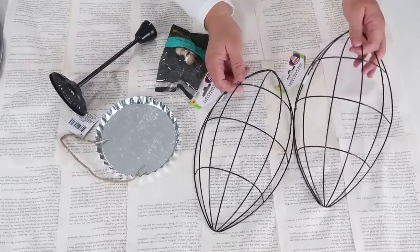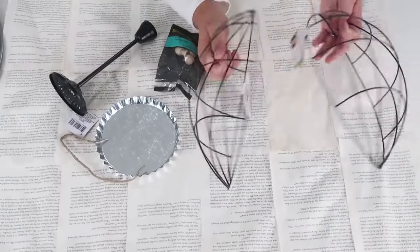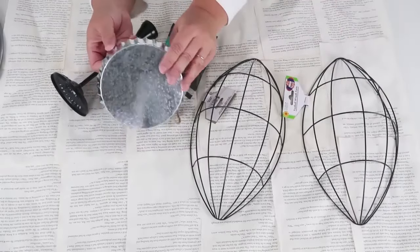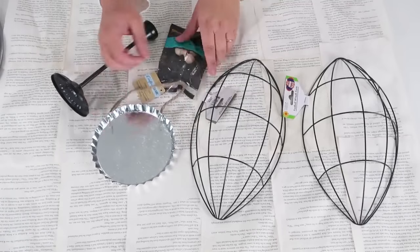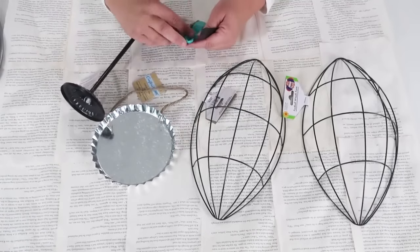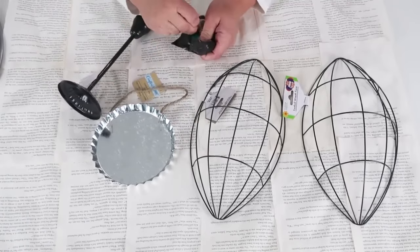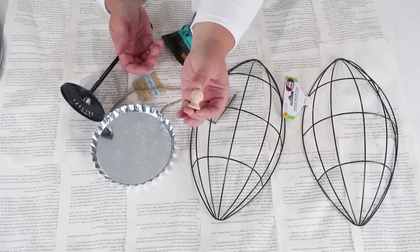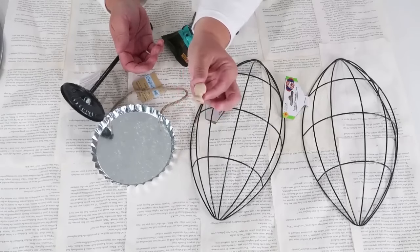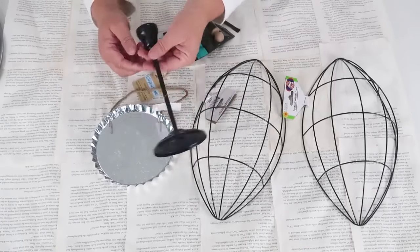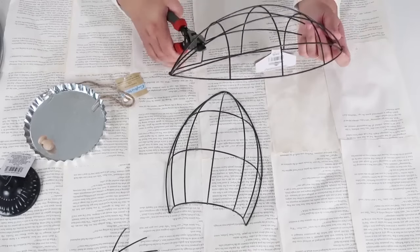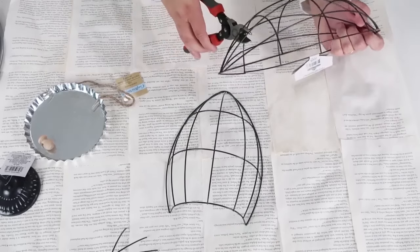For this DIY, we are going to be taking two of these wire football wreath forms, one of these galvanized, I almost call them bottle cap large metal plaques, some of these wood finials, I picked these up from Hobby Lobby. We're going to be using one of them. And then the last thing, this candle stem holder from the home decor section. We're also going to be using some zip ties, but I'll show those in a little bit.